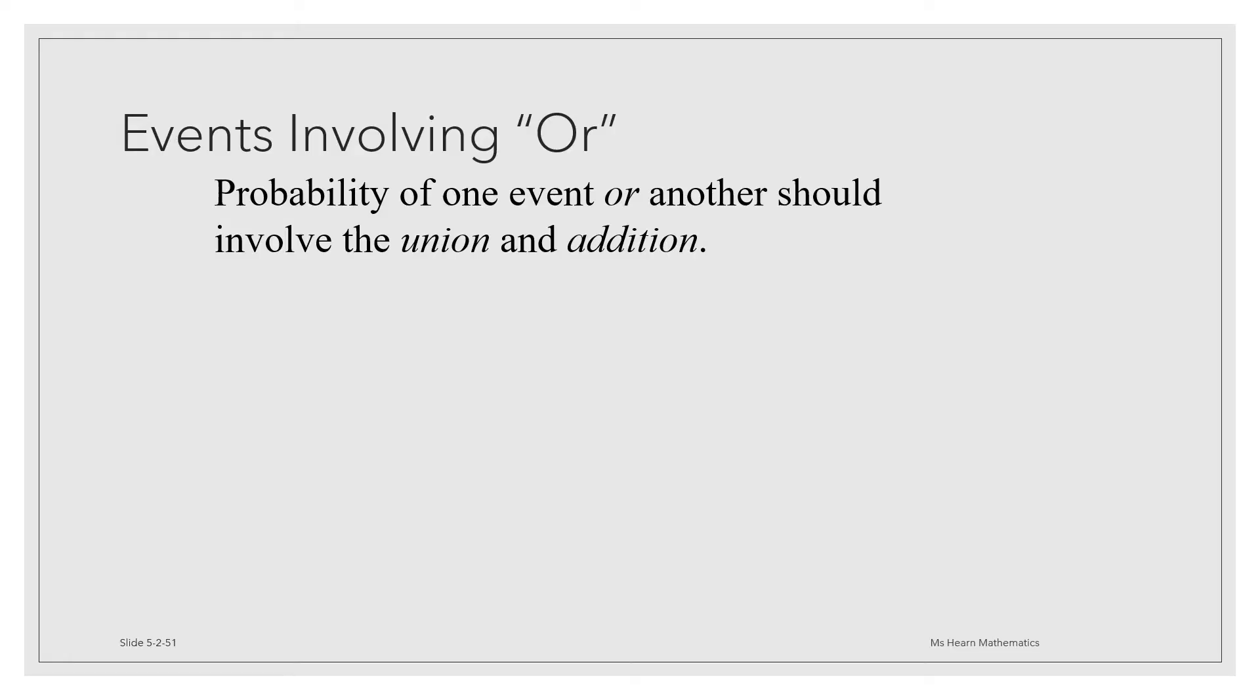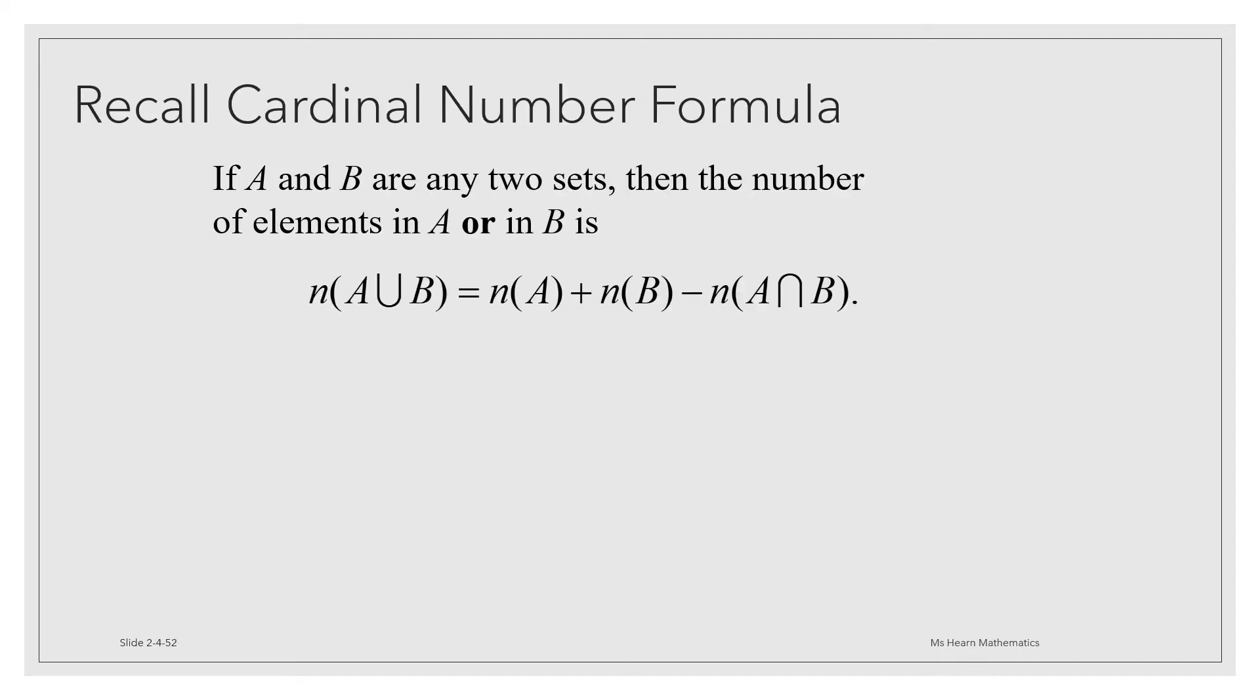Probability of one event or another should involve the union and addition. Remember when we learned in the set theory chapter that when we were trying to count the number of elements in the union of two sets, we said that you had to count the number in one set plus the number in the other and subtract off the overlap.